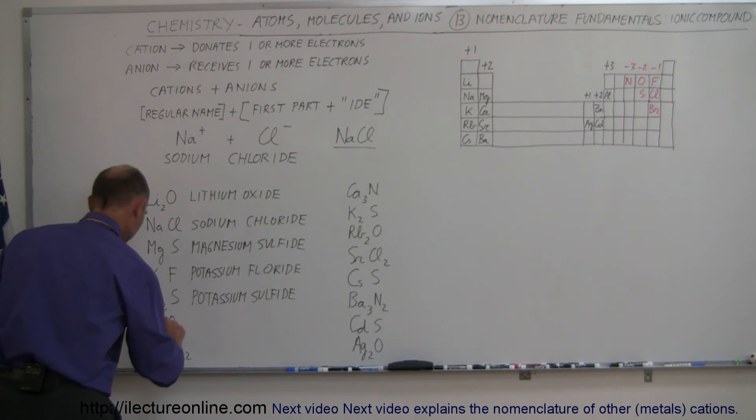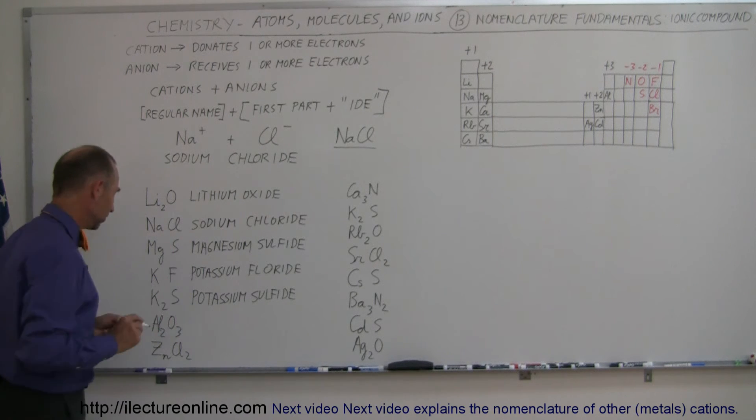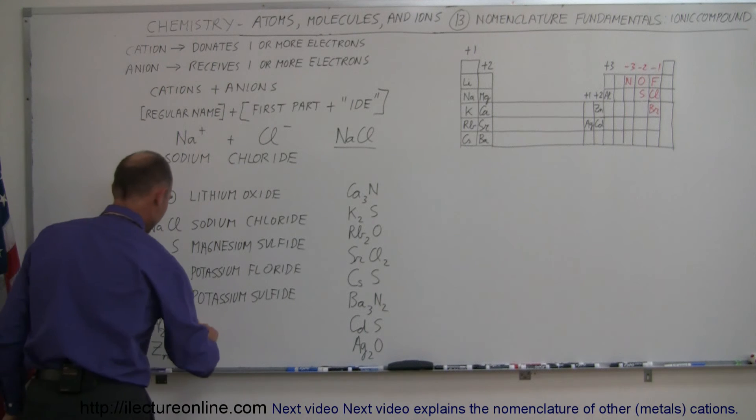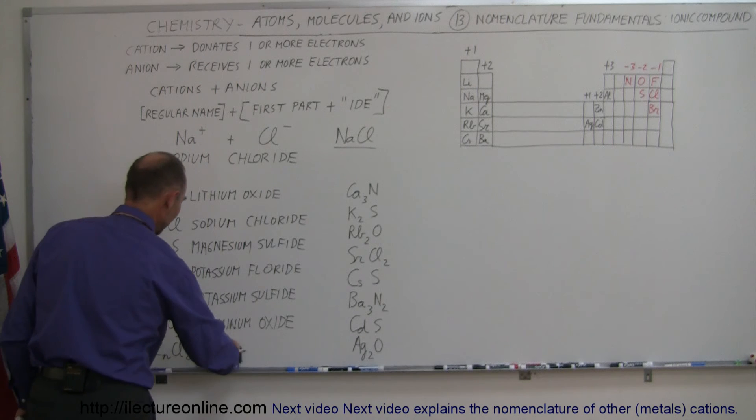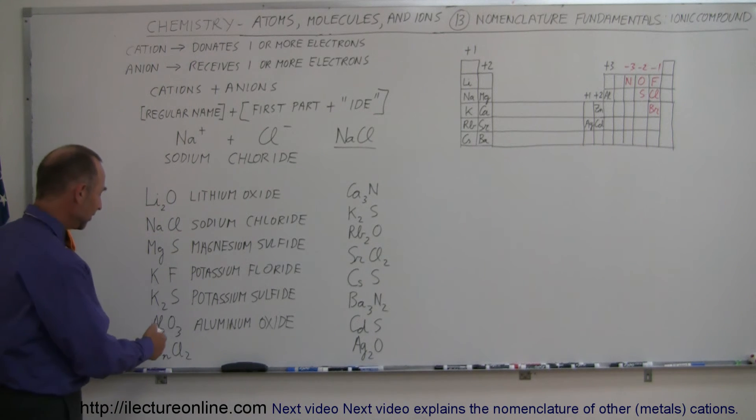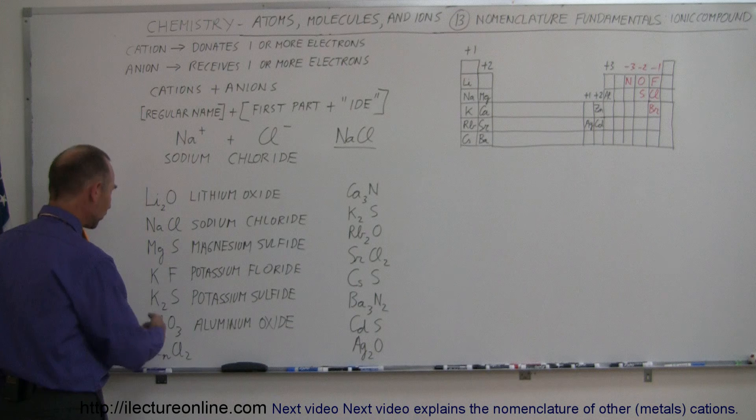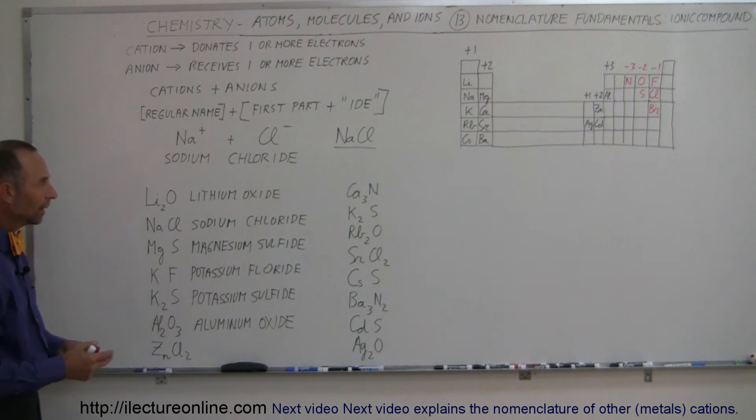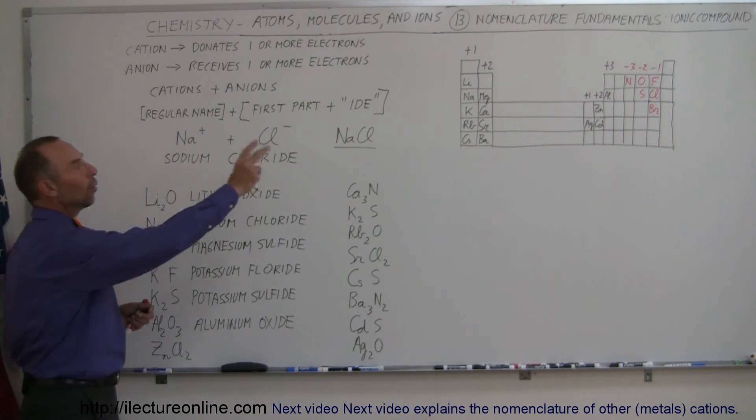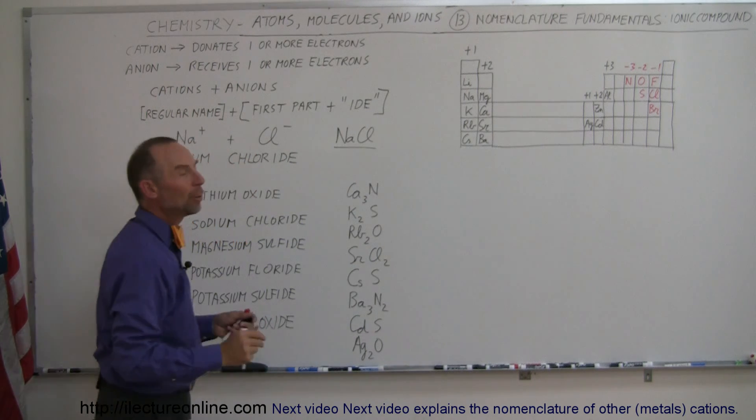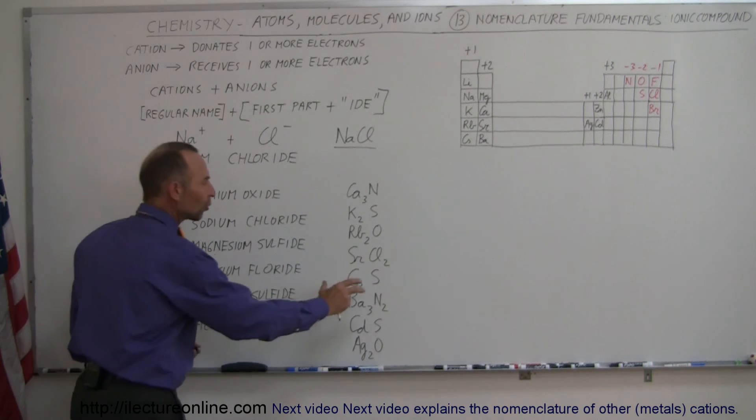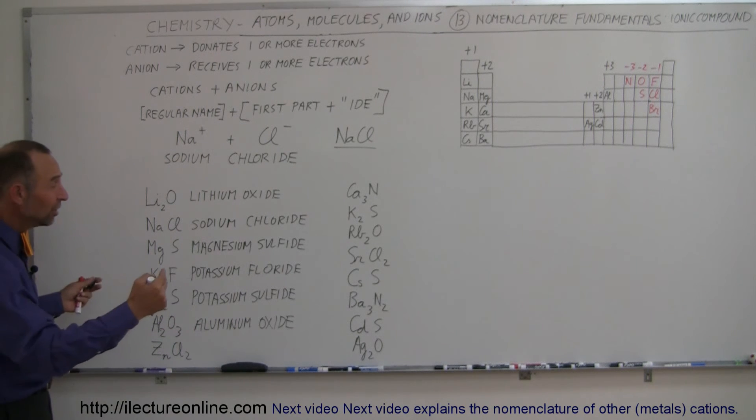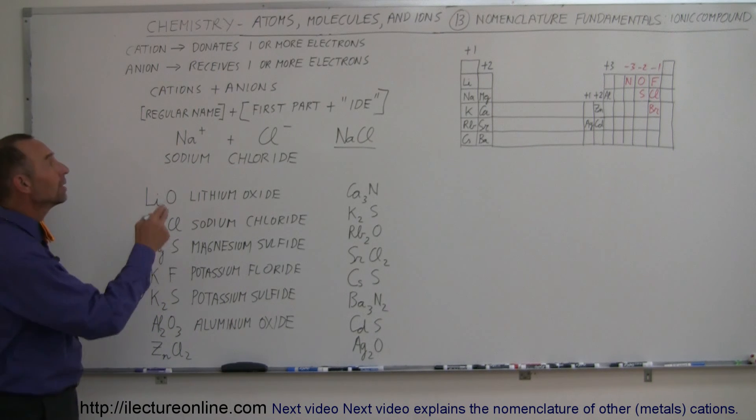Here we have aluminum oxide. You can really see the pattern here. Here we have zinc chloride. Now you say, well how do we know that these have three oxygens or two chlorides or one sulfur or one fluorine? How do we know those? Well, there's no choice. Since they only become ionized in one particular way, we know that these can only form compounds in one particular way. So we don't have a multitude of names to describe the various combinations that could exist because there's only one combination in each kind of bond between the cations and anions.